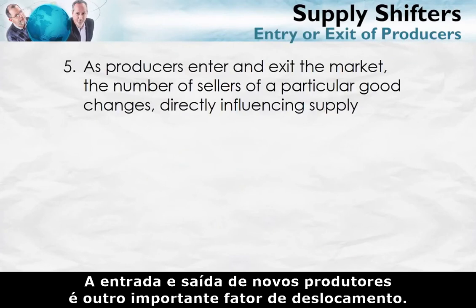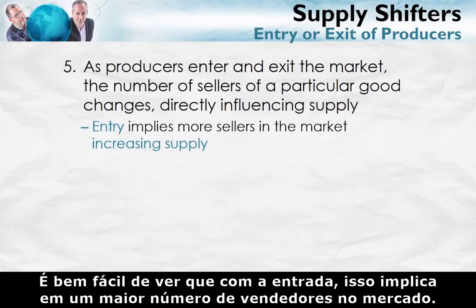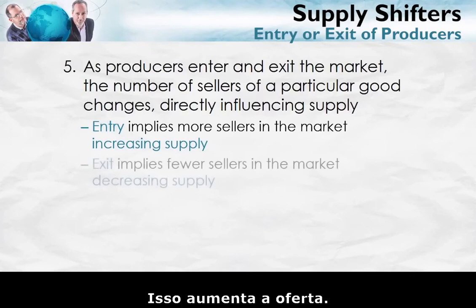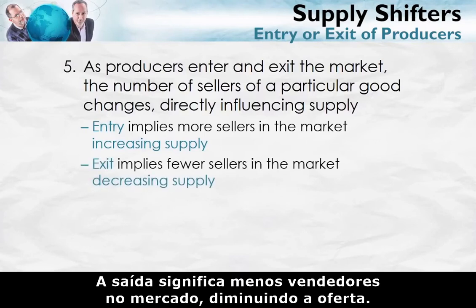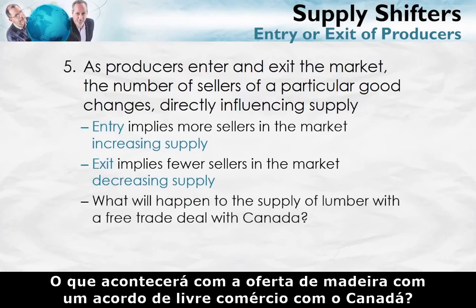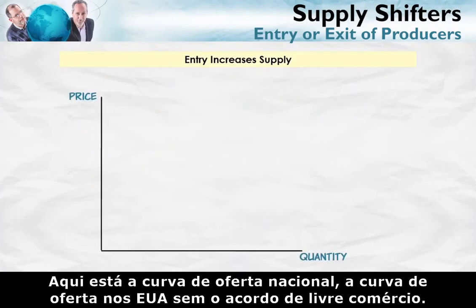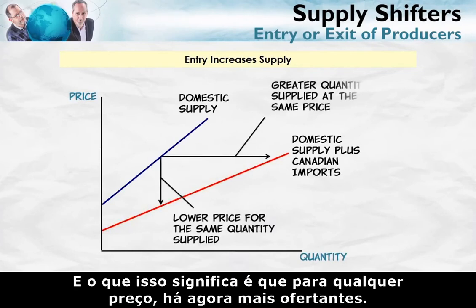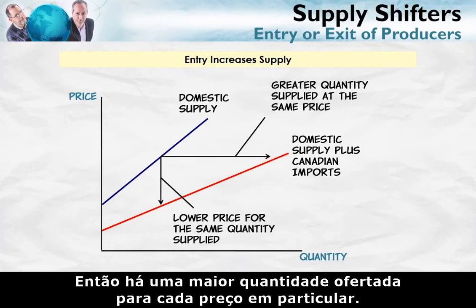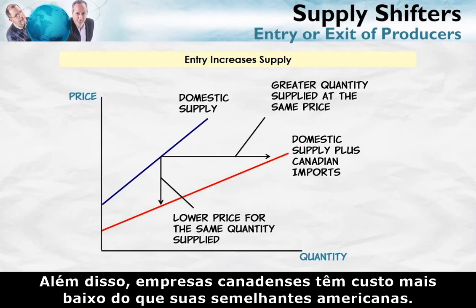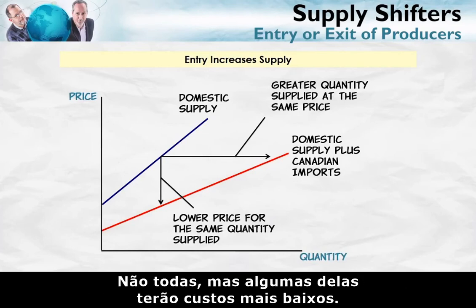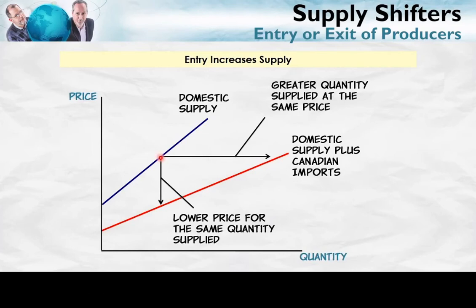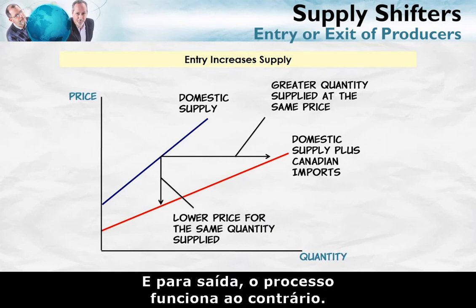The entry and exit of new producers is another important supply shifter. Entry implies more sellers in the market, which increases supply. Exit implies fewer sellers, decreasing supply. For example, a free trade deal with Canada for lumber — like NAFTA — means that at any price there are now more suppliers, so a greater quantity is supplied at each price. Additionally, some Canadian firms have lower costs than American counterparts, meaning at any quantity there's a lower price. For exit, the process works in reverse.